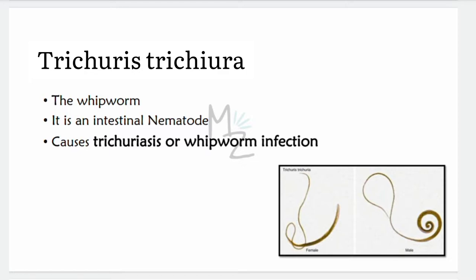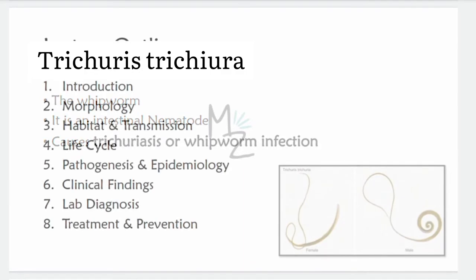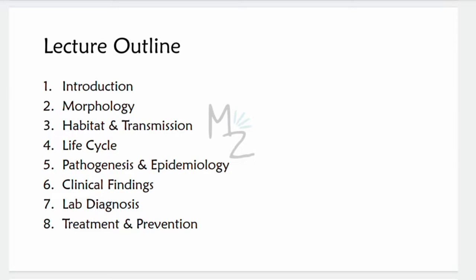It is responsible for causing trichuriasis, or whipworm infection. As in this figure, you can see on the right side is the male — it is whip-like, with a handle and a lash — and on the left is the female. This organism is not hermaphroditic. To outline: we'll talk about morphology, habitat and transmission, life cycle, pathogenesis and epidemiology, clinical findings, lab diagnosis, treatment, and prevention.